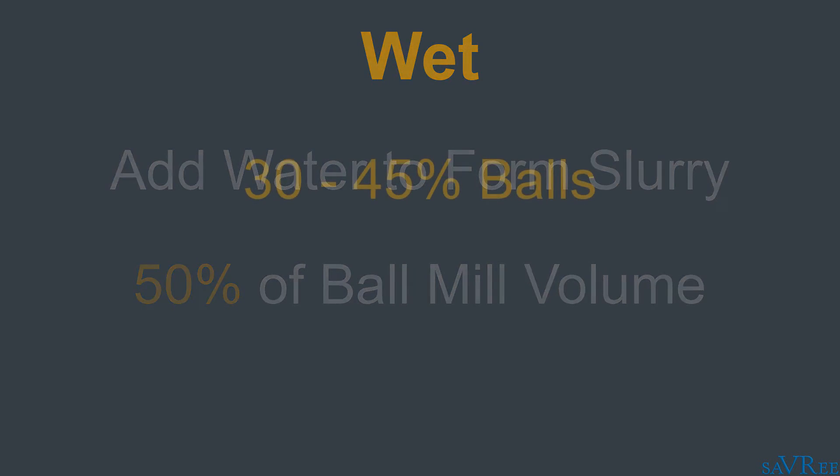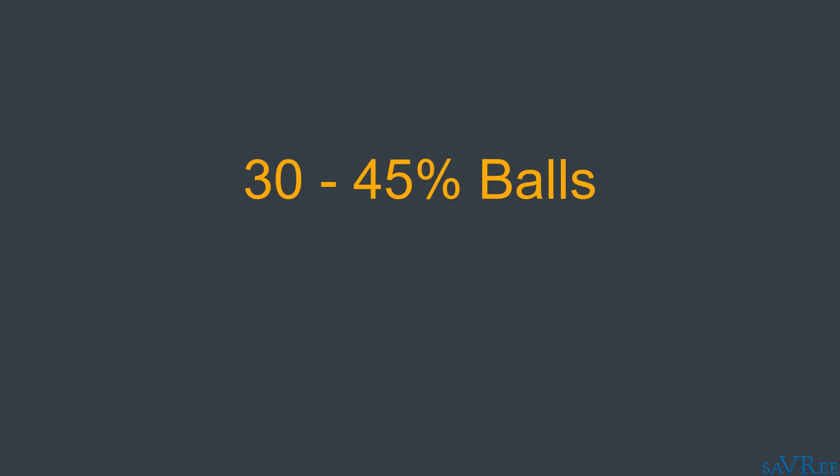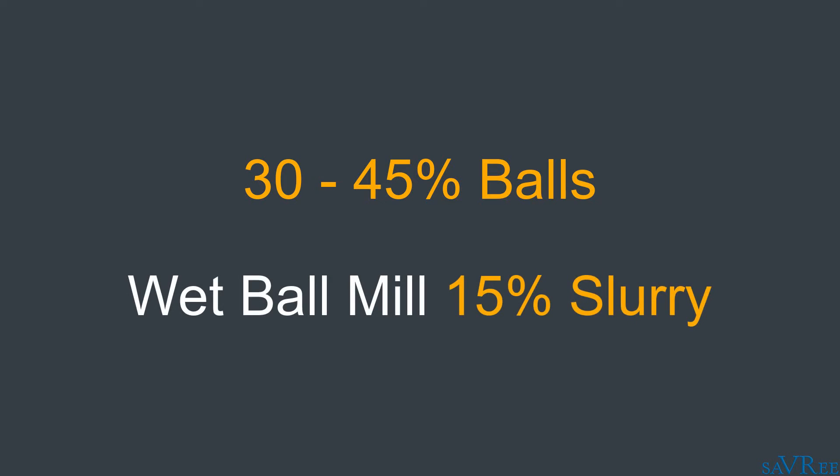Typically, the ball mill may be charged with 30 to 45% of balls. However, when we have a wet ball mill, then approximately 15% may form a slurry. That is a mixture between the water and the crushed ore, sometimes also referred to as pulp.